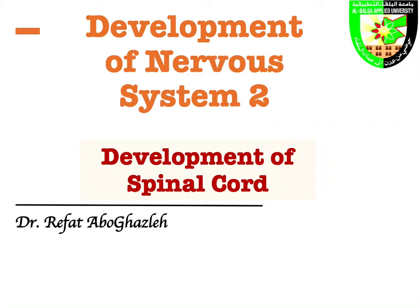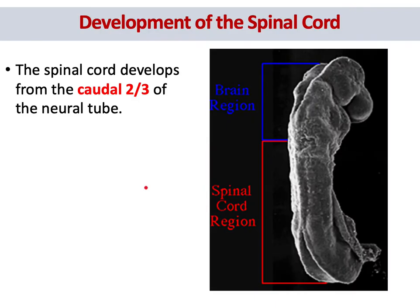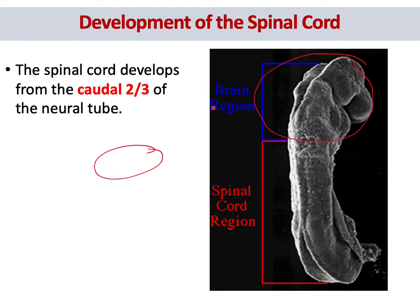Welcome to the second lecture in the development of the nervous system. Today we will focus on the development of the spinal cord. We have a lateral posterior view of the neural tube of an embryo. The neural tube is the primordium of the brain and spinal cord. The upper one-third gives the brain, brain stem, and diencephalon, while the caudal two-thirds give the spinal cord.